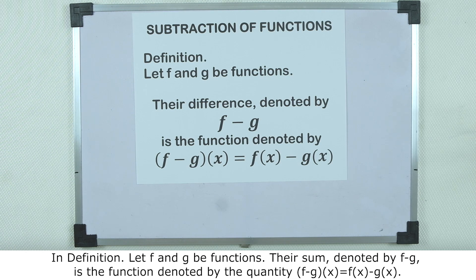In definition, let f and g be functions. Their sum, denoted by f minus g, is the function denoted by the quantity of f minus g times x is equal to f of x minus g of x.